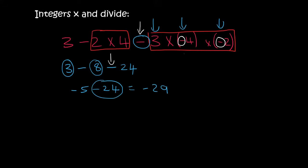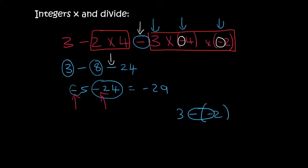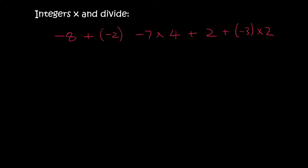But Kevin, I thought you said that two negatives give you a positive. Yes, but that's only when the negatives are next to each other. For example, when you have something like 3 minus minus 2 — here you have a minus and a minus next to each other. But when it's just minus 5 minus 24, then you don't say a minus and a minus is a plus. So with BODMAS, times and divide comes before plus and minus — let's look for times and divides first.